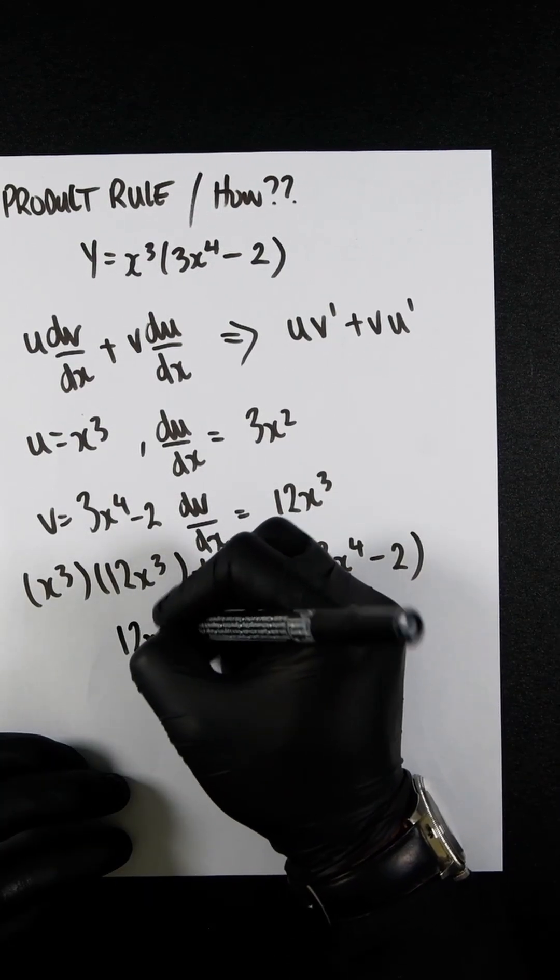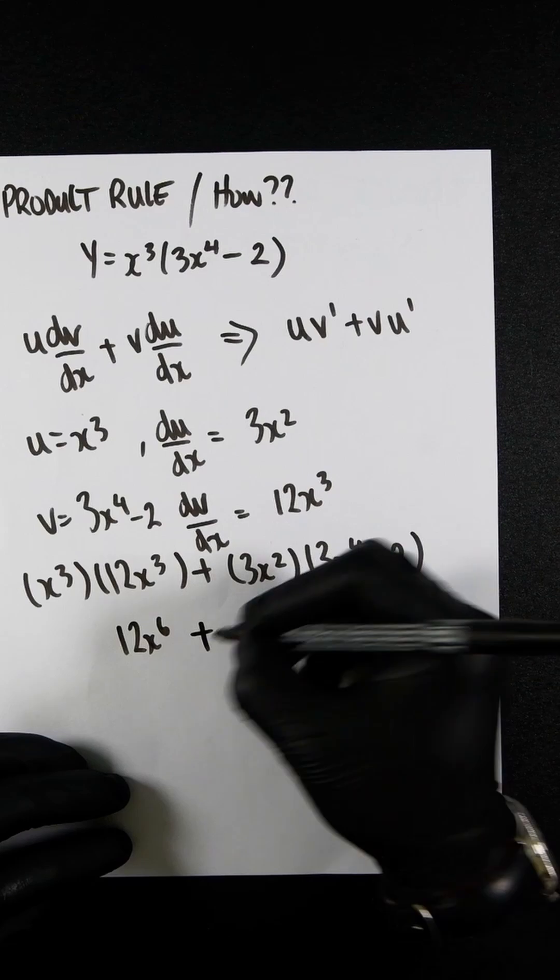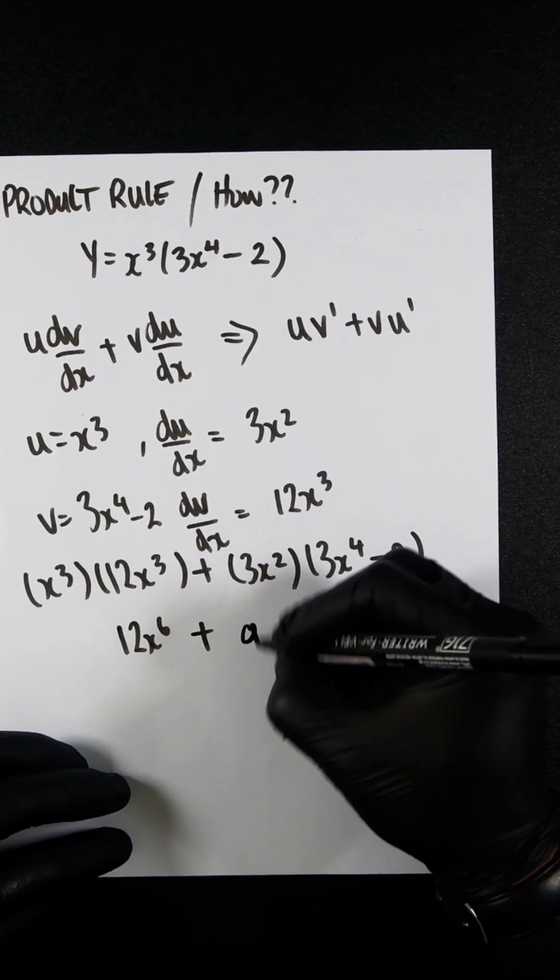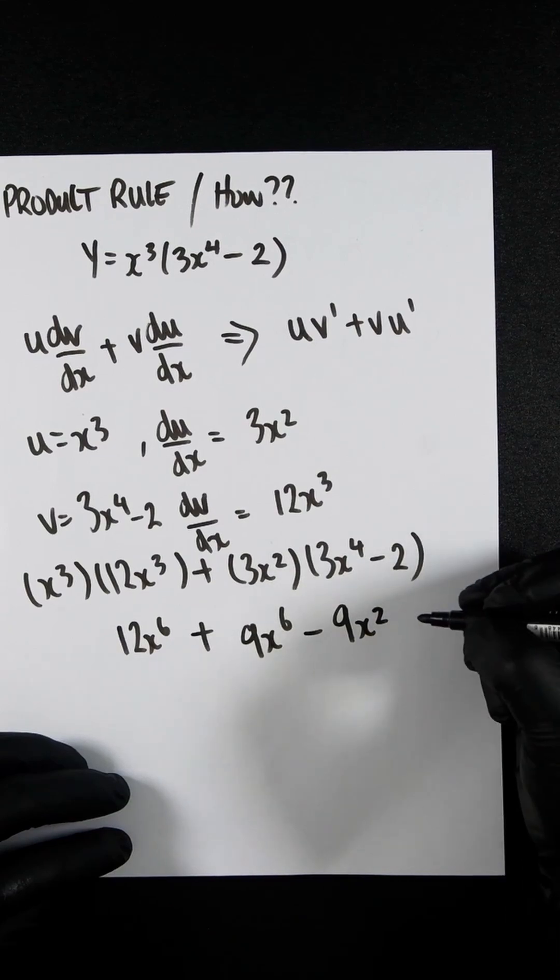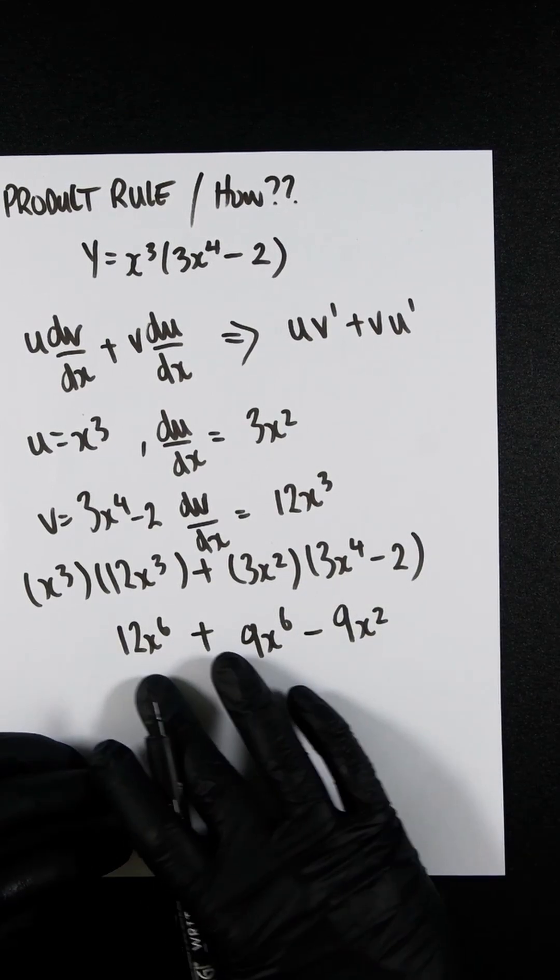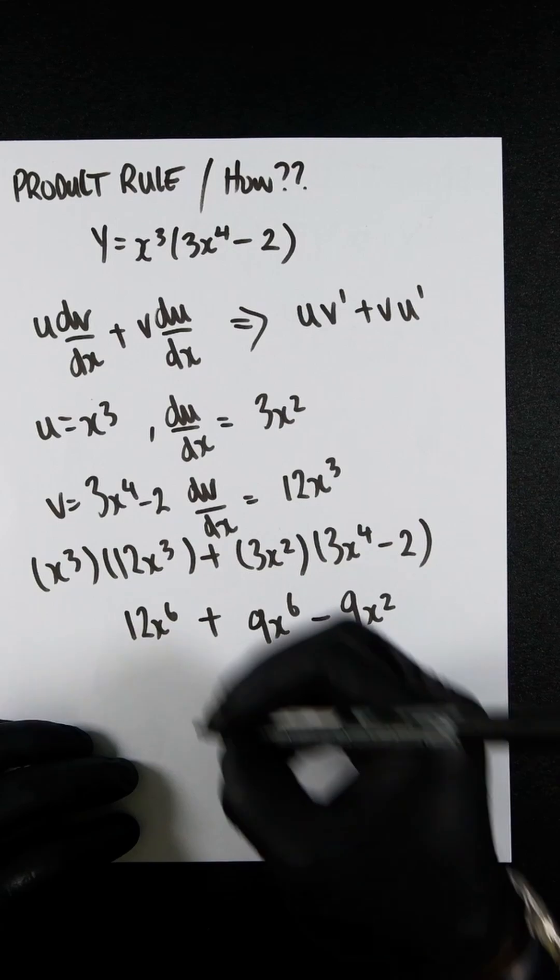We can now clean up, so that's going to be 12x to the 6 plus 9x to the 6 minus 9x squared. We can then add these together because the powers are the same,